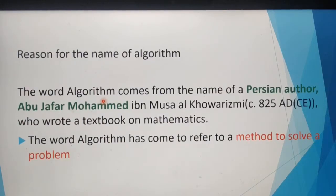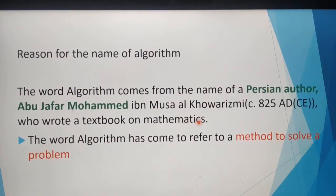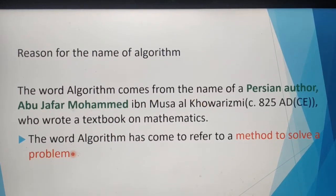Let's see how the word algorithm comes. The word algorithm comes from the name of a Persian author who wrote a mathematics textbook in AD 825. His name is Abu Jafar Muhammad. So the word algorithm comes from the name of that Persian author, and it has come to refer to a method to solve a problem.